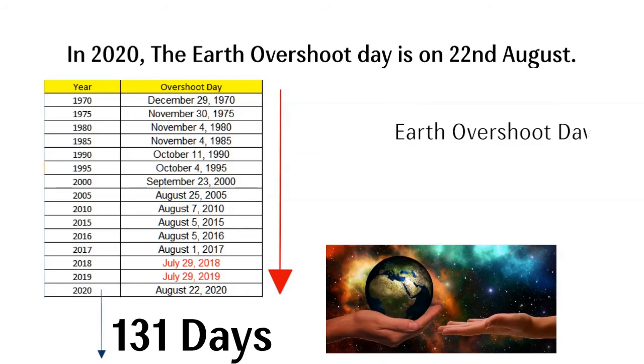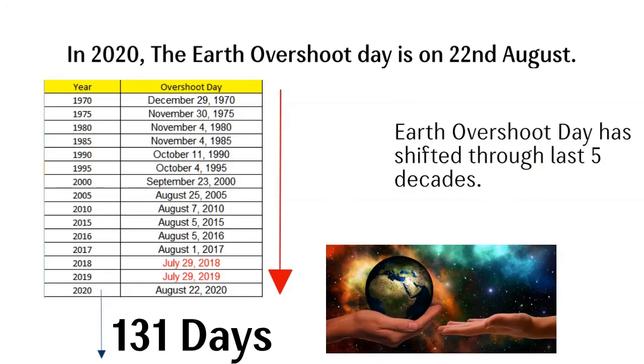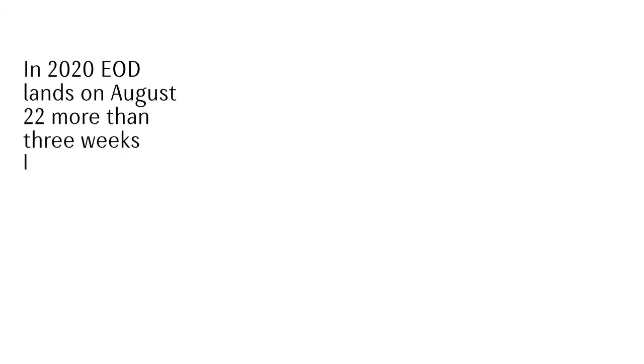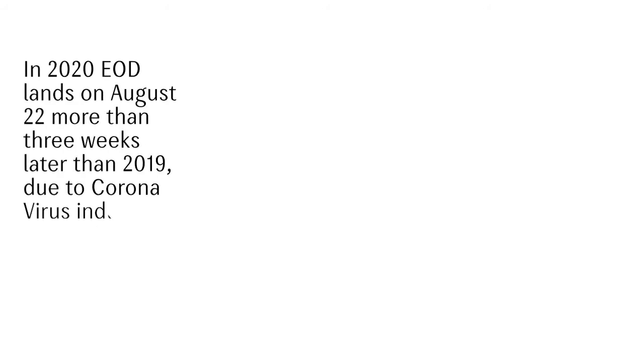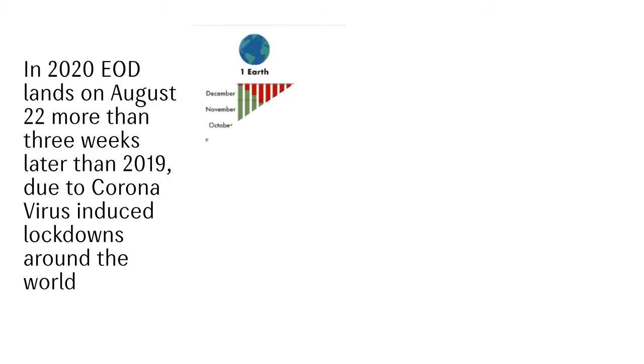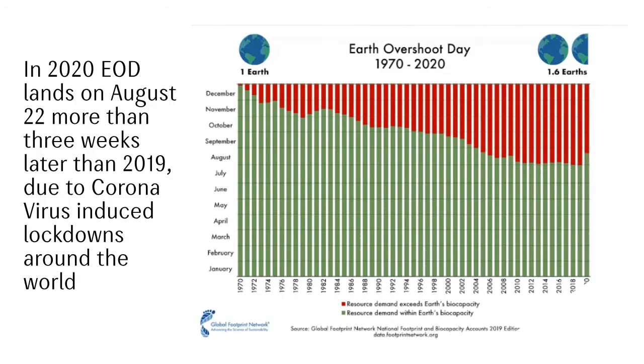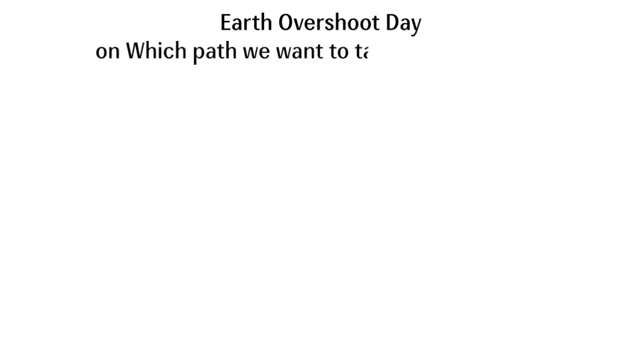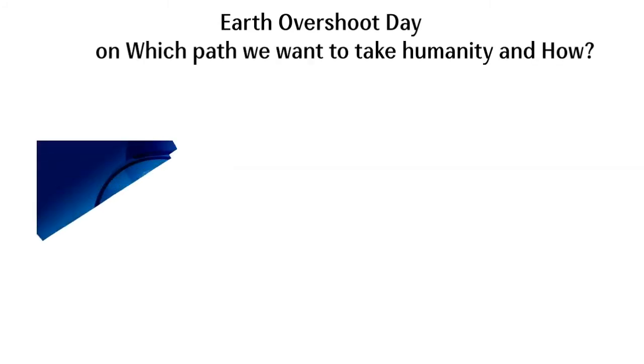We can see how Earth Overshoot Day has shifted through the last 5 decades. In 2020, Earth Overshoot Day lands on August 22, which is more than 3 weeks later than 2019 — but this is due to the coronavirus-induced lockdown around the world. This day is the high time for us to decide which path we want to take humanity, and how.